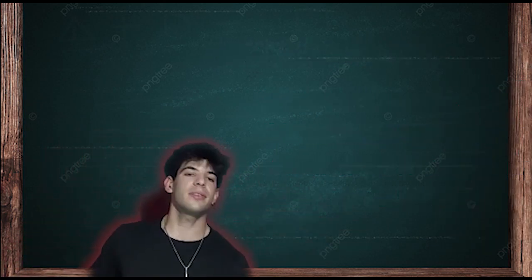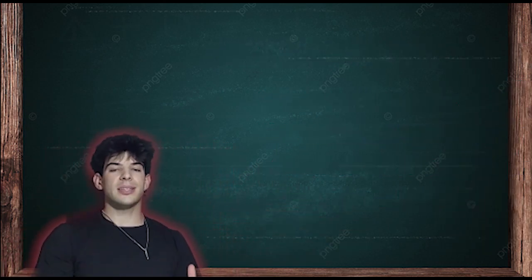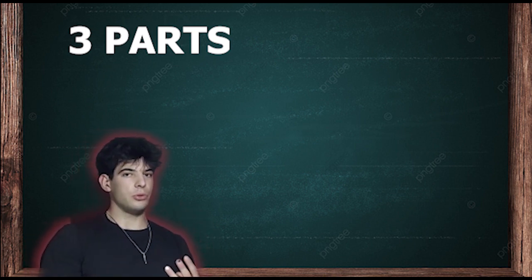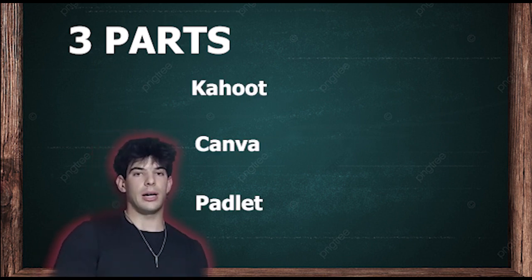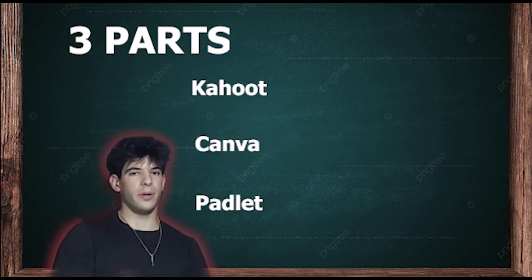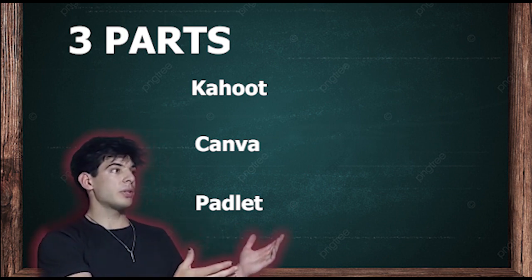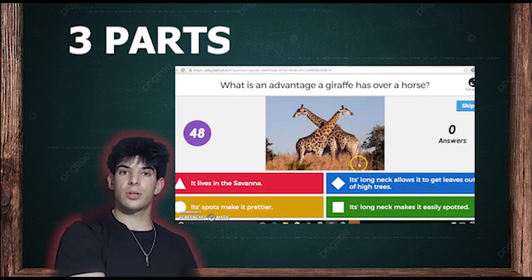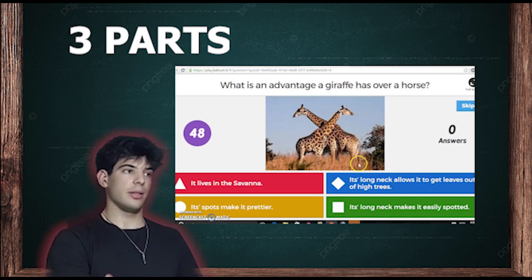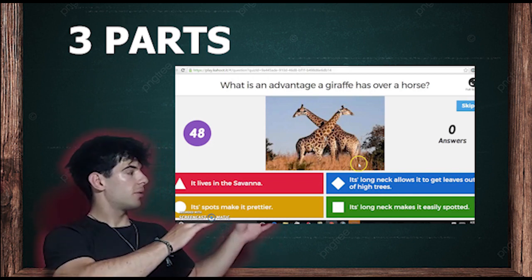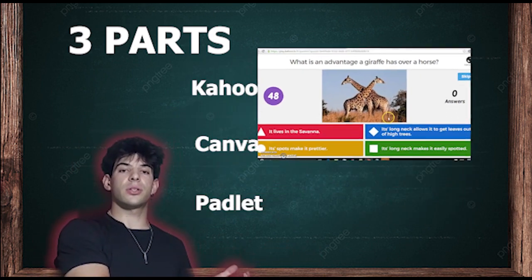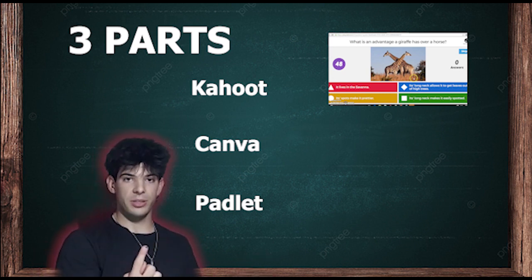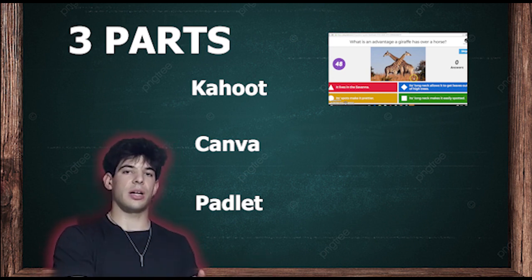This activity will be divided into three parts, as we have three different tools for them to use: Kahoot, Canva, and Padlet. First of all, with the Kahoot part, we will introduce the topic of animals in English and show some animals and images of these animals in order to let them learn and have visual support. Then, we will ask the students to brainstorm animal names in a period of two minutes and they will say as many animal names as they can.